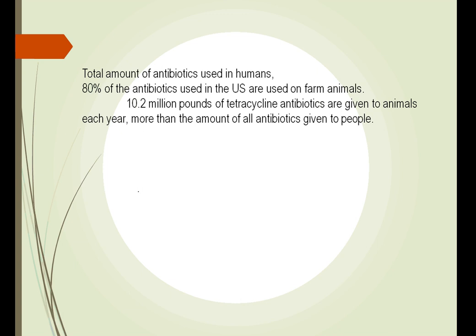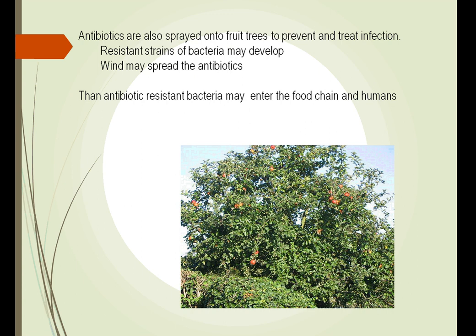80% of the antibiotics used in the US are used on farm animals — that's 10.2 million pounds given to animals every year, much more than is given to people. So the potential for abuse is high among farmers. Antibiotics are sprayed into fruit trees and, since they're sprayed indiscriminately into the air, they are carried to other places. If not washed off the fruit, they enter our system and cause us to develop resistance.